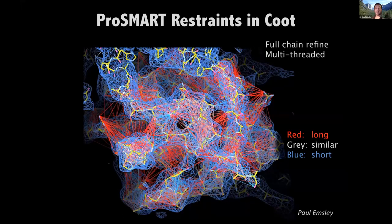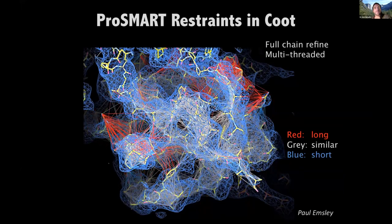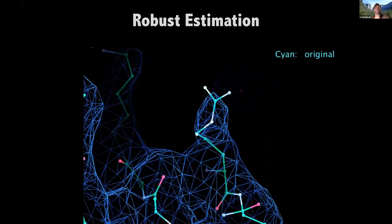Coot displays external restraints on a red-to-grey-to-blue scale, where red or blue means they are inconsistent — either too long or too short relative to the reference high-resolution homologous structure. Ideally you want them to end up relatively grey after refinement. But there may still be some red restraints indicating inconsistency, and sometimes that's a good thing. You don't want to force the structure to become too strongly like the high-resolution homologue if there is actually a true difference between that structure and the one you're trying to refine.